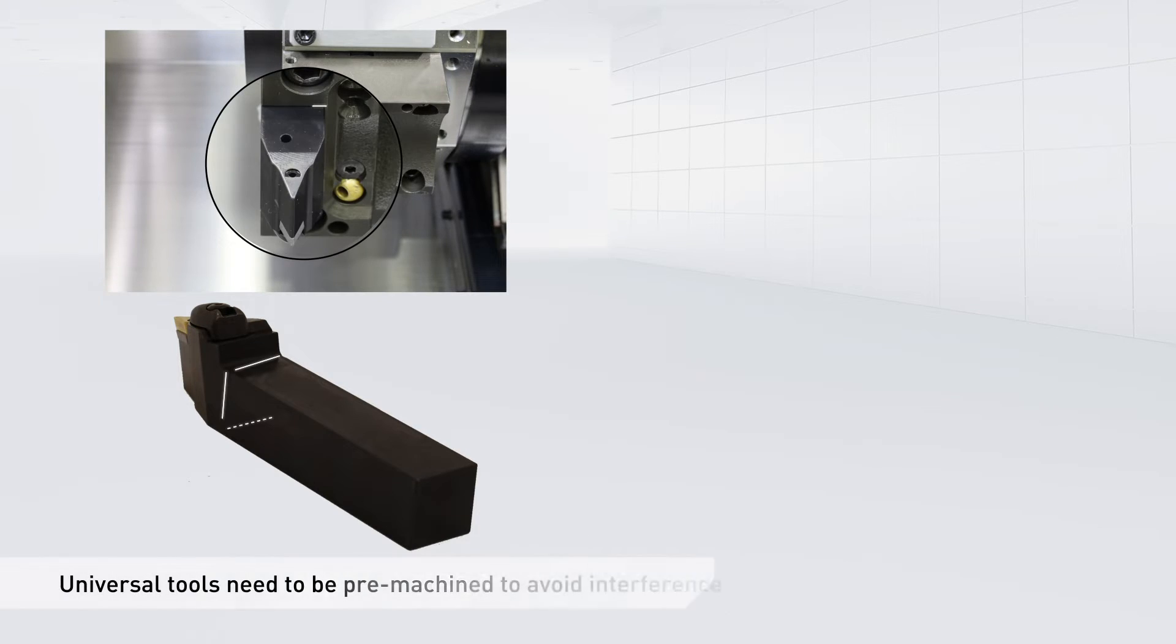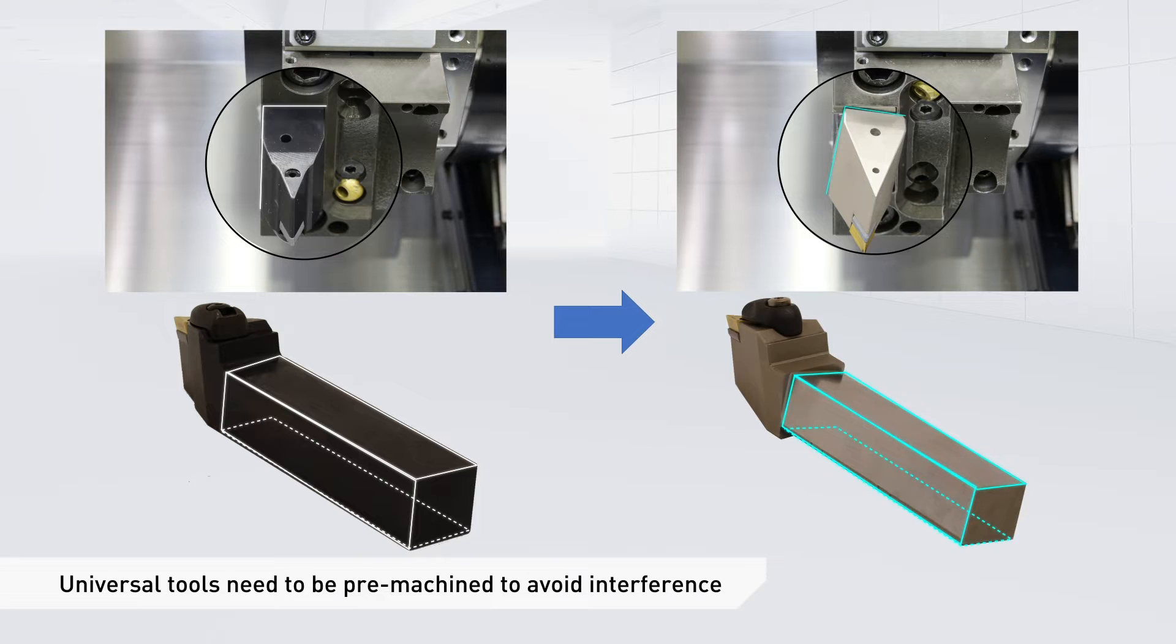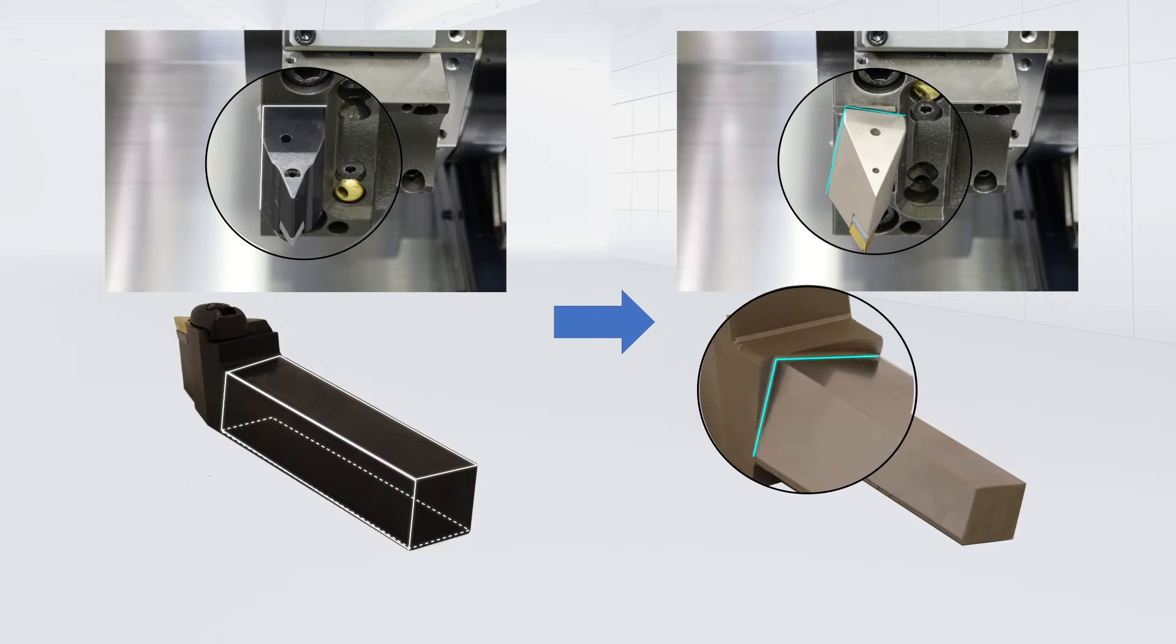However, on turning centers, the tool shank must be pre-machined on three phases and a special jig must be installed to incline the tool, making the process on turning centers a lot more complex.